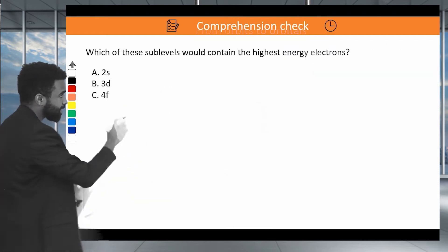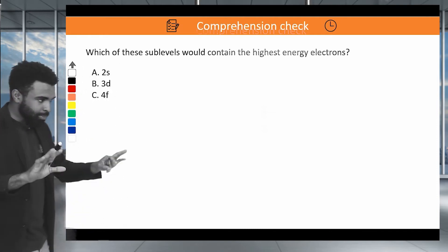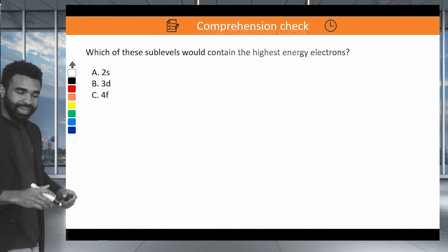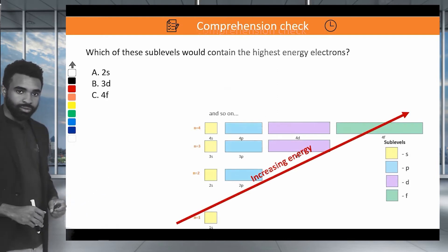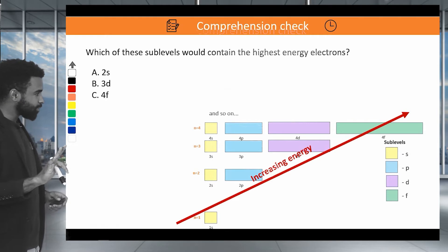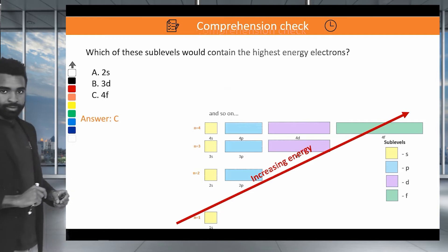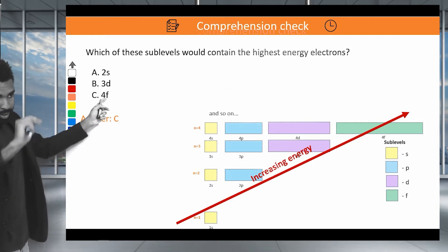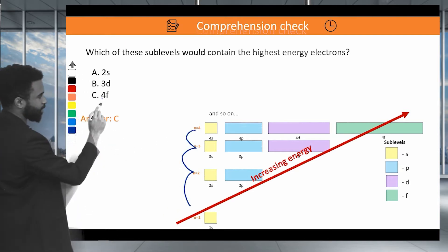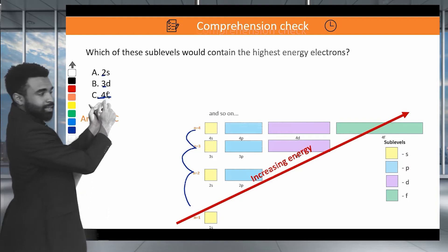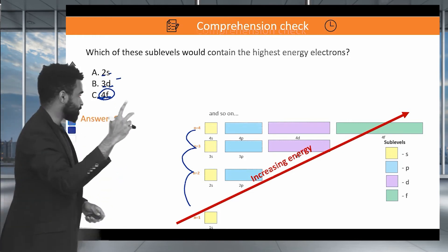Which of these sublevels would contain the highest energy electrons? The answer is 4F. Why? Two reasons: first, level 4 is higher energy than 3, which is higher than 2, which is higher than 1. Second, F is higher energy than D, higher than P, higher than S. So 4F is the highest energy for both reasons.